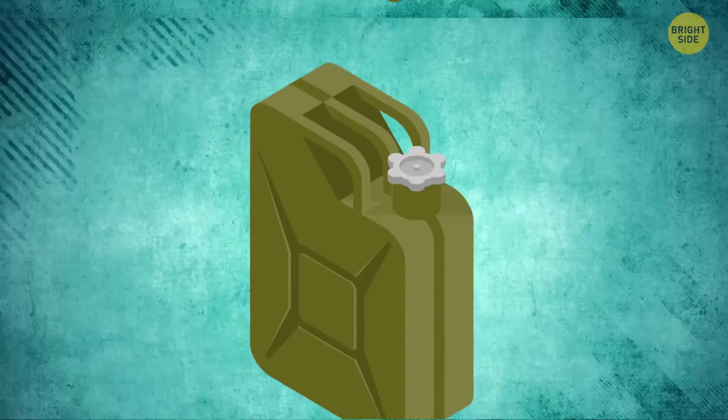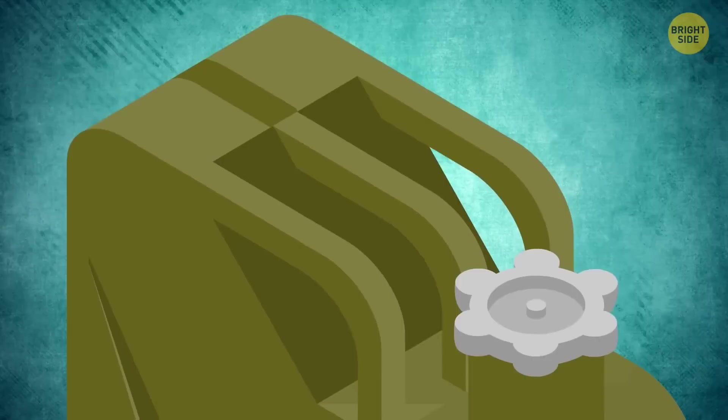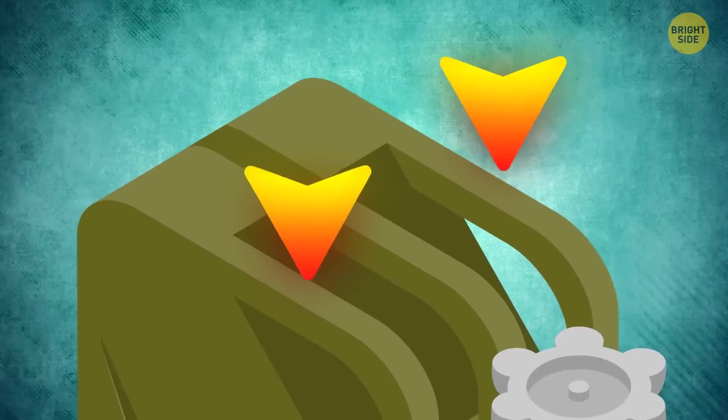Jerry cans have three handles for a reason. It's a smart designer move, so when you carry it alone, you use only the central handle to distribute the weight evenly. But your friend wants to help you out. Each of you grabs the side handle.